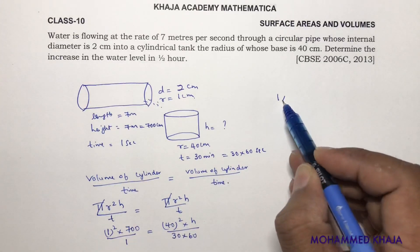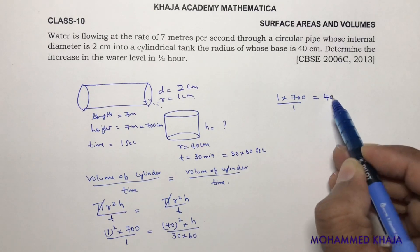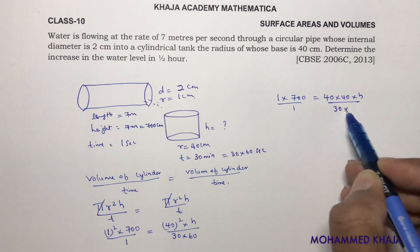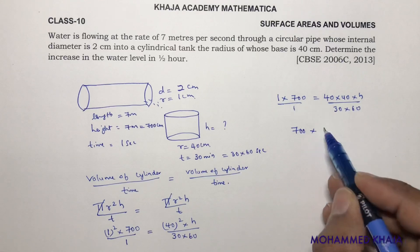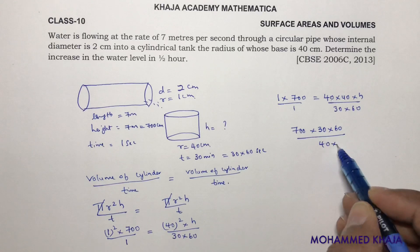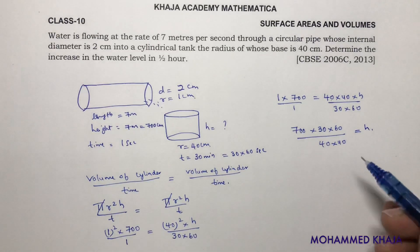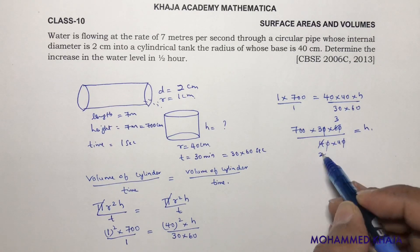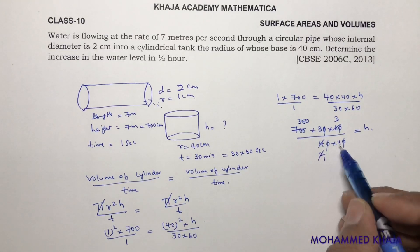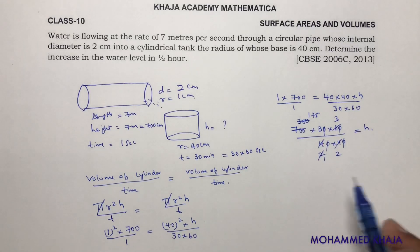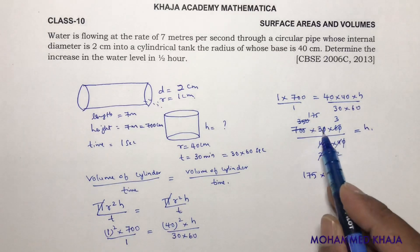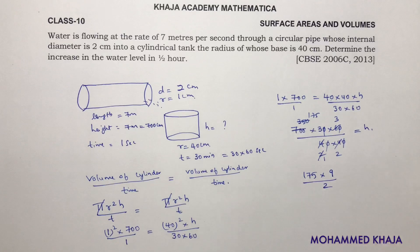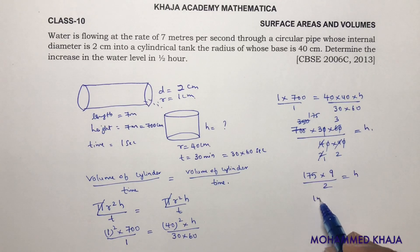Now solving for h: 1² × 700 / 1 = 40 × 40 × h / (30 × 60). Transposing: h = 700 × 30 × 60 / (40 × 40). Cancelling zeros and simplifying: 700 × 1800 / 1600. This reduces to 175 × 9 / 2, giving h = 1575 / 2 centimeters.